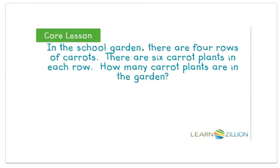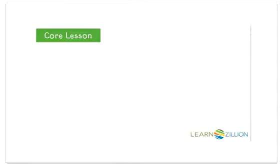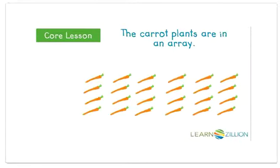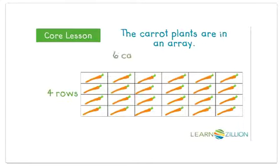Let's try to solve the carrot problem and figure out how many carrot plants are in this garden. The carrot plants are in an array. Each group is in a row. There are four rows with six carrots in each row.